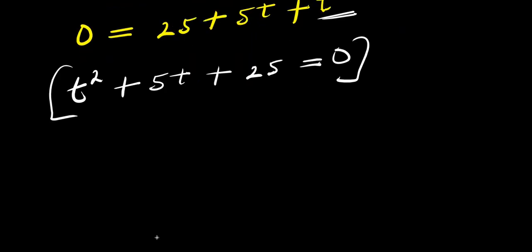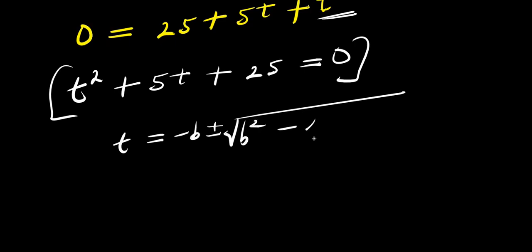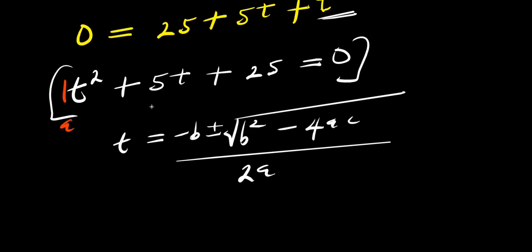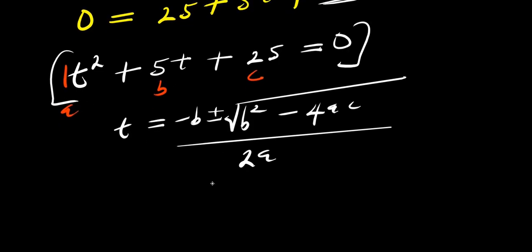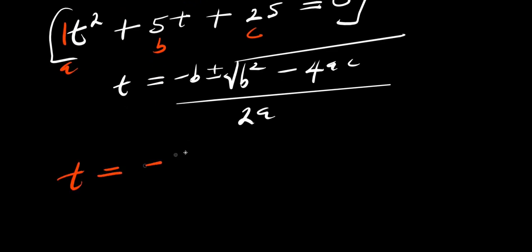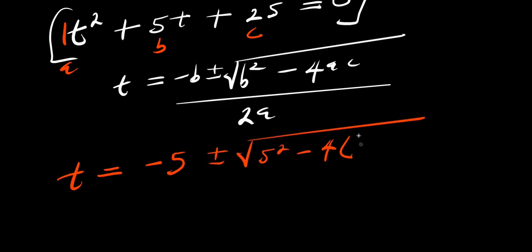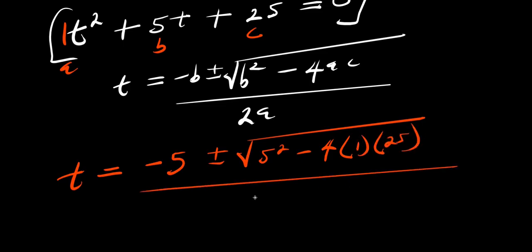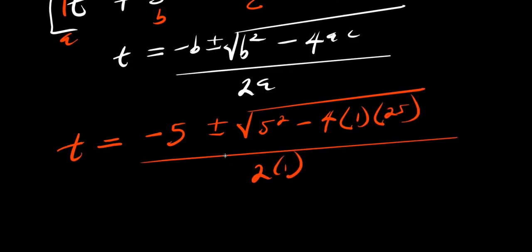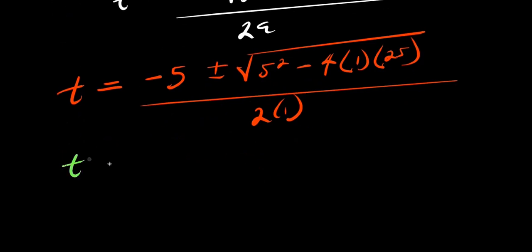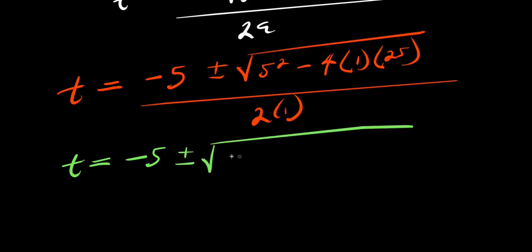Using the quadratic formula: t = (−b ± √(b² − 4ac)) / (2a), where a = 1, b = 5, c = 25. Substituting: t = (−5 ± √(25 − 100)) / 2 = (−5 ± √(−75)) / 2.